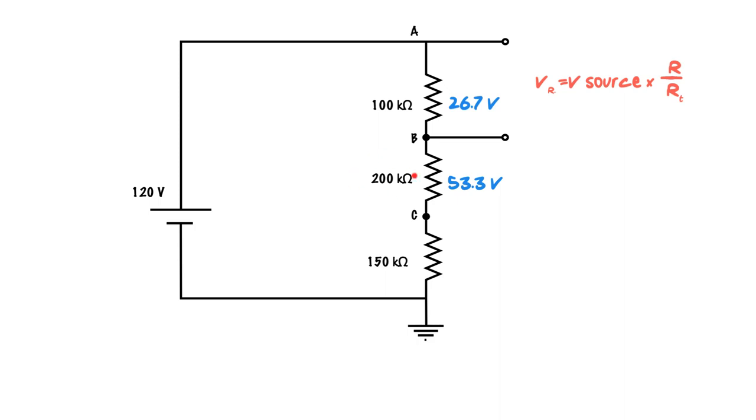We do the same thing to the second, 200k ohms divided by 450k ohms times 120 gives us 53.3 volts.